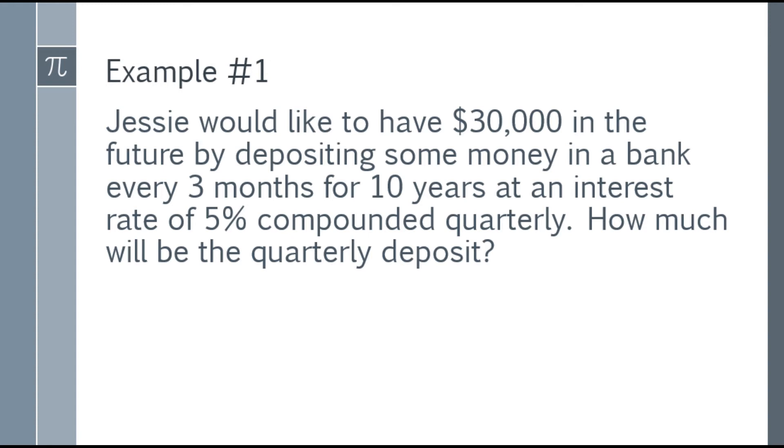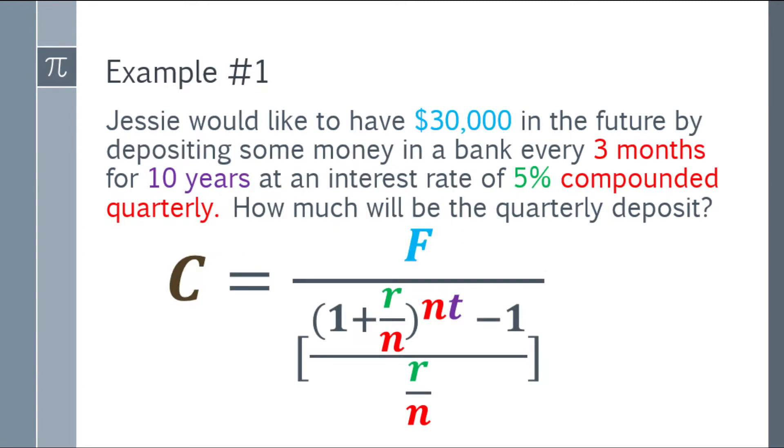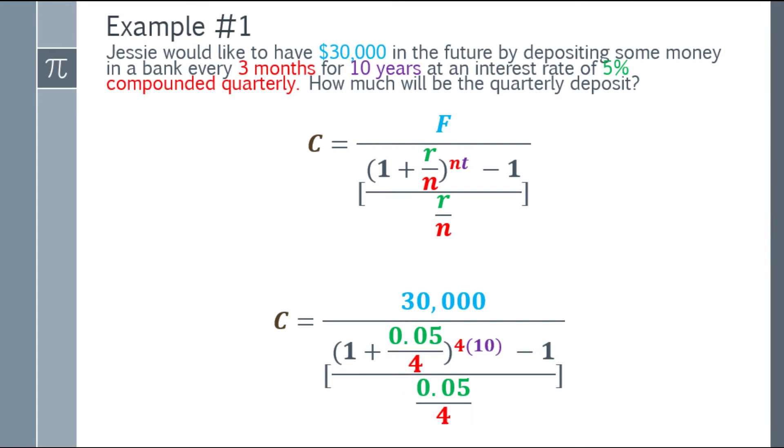Example number 1: Jessie would like to have $30,000 in the future by depositing some money in a bank every 3 months for 10 years at an interest rate of 5% compounded quarterly. How much will be the quarterly deposit? First step, write the formula. Next step, let's substitute the values.